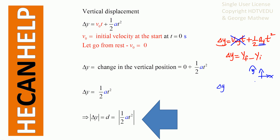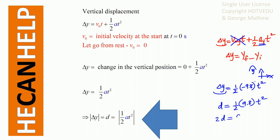With those definitions, delta y equals one-half times negative 9.8 times t squared. Taking magnitudes and letting d represent the change in vertical position, d equals one-half times 9.8 times t squared. Multiplying both sides by 2 gives 2d equals 9.8t squared. Dividing both sides by 9.8 gives t squared equals 2d over 9.8, so t equals the square root of 2d over 9.8.